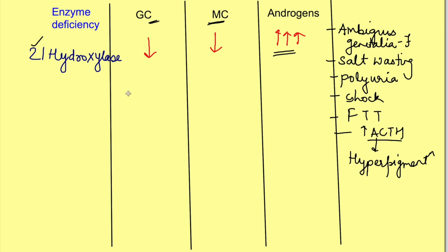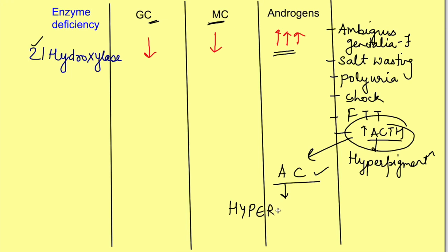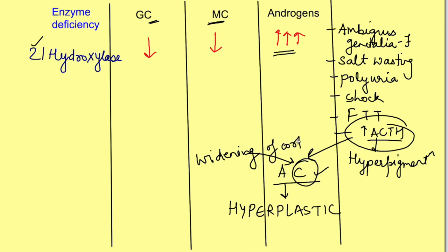Regarding morphological changes in 21-hydroxylase deficiency: because of the increase in ACTH, this increased ACTH acts on the adrenal cortex leading to proliferation of adrenal cortical cells, causing hyperplastic adrenals — the adrenal gland increases in size due to increase in cell number. Since ACTH acts on the adrenal cortex, there will be widening of the cortex. This is why the condition is known as congenital adrenal hyperplasia.